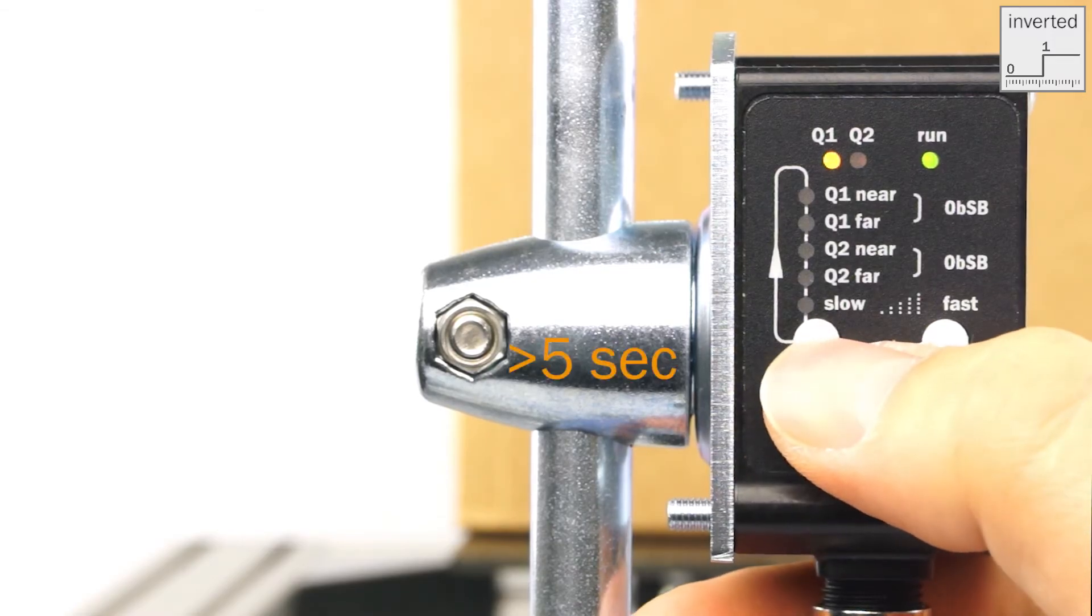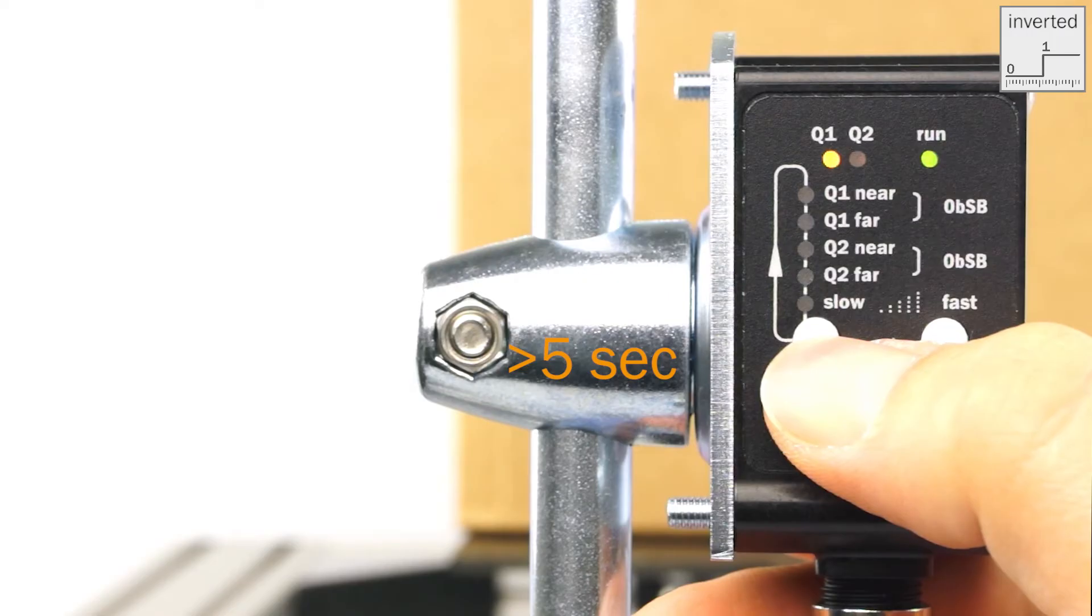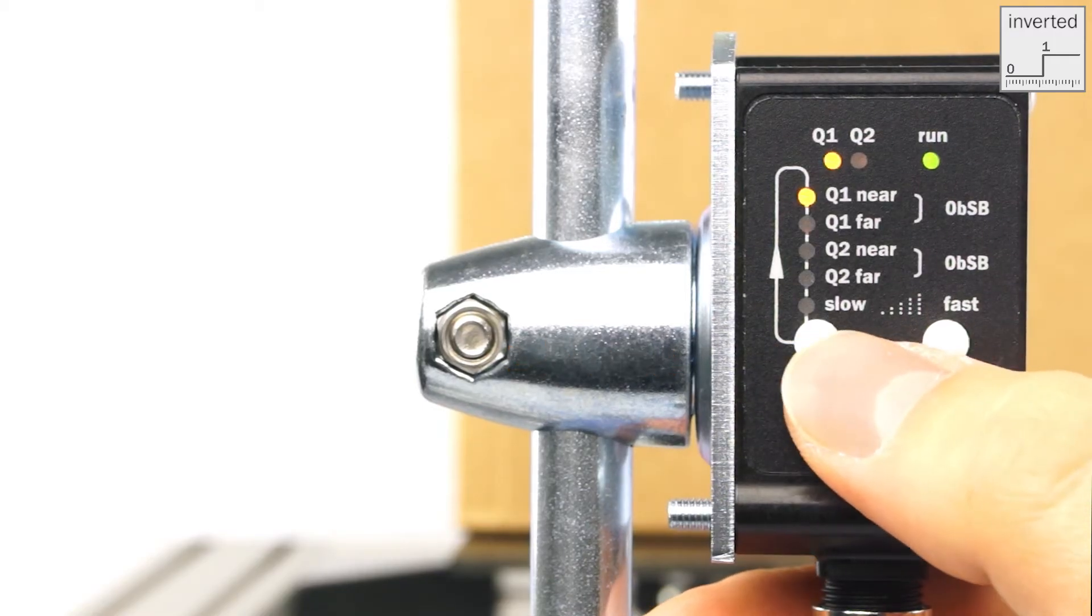To unlock the sensor, press the select button for a few seconds. The LED Q1 near diode comes on.